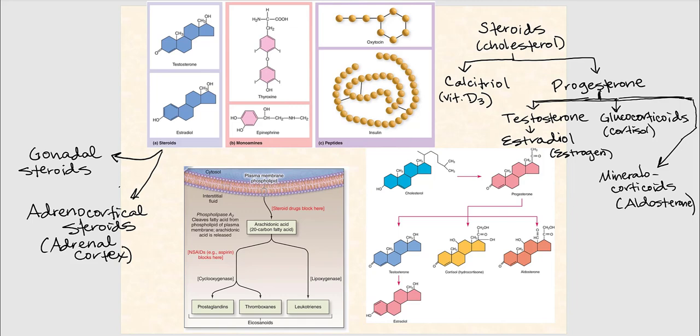Before discussing this slide, note that you are not expected to know the molecular or chemical structures of these compounds. This is just showing us the steroids, monoamines or biogenic amines, and peptides we looked at before. It also shows the breakdown of steroids — gonadal steroids produced by the gonads, adrenocortical steroids produced by the adrenal cortex, and eicosanoids all derived from arachidonic acid.